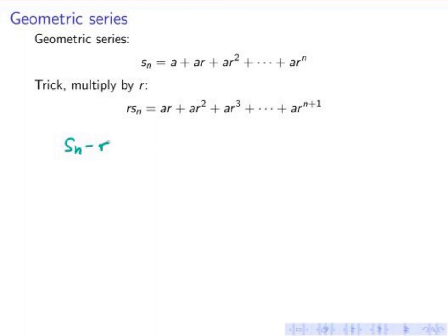So I look at S_n minus r S_n. Now see, in S_n we have all these terms ar, ar squared, and so on, which also appear here excluding the last term.